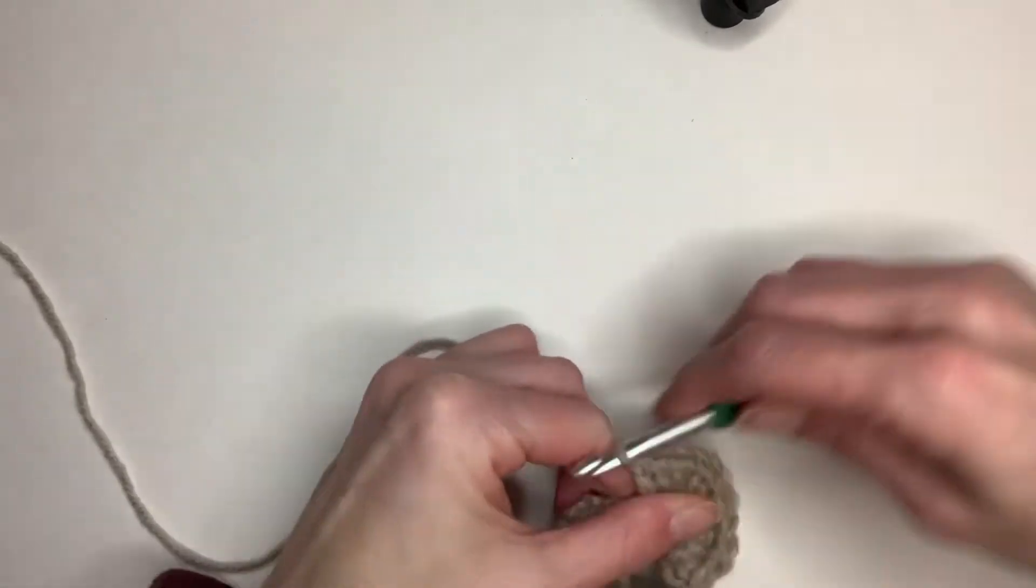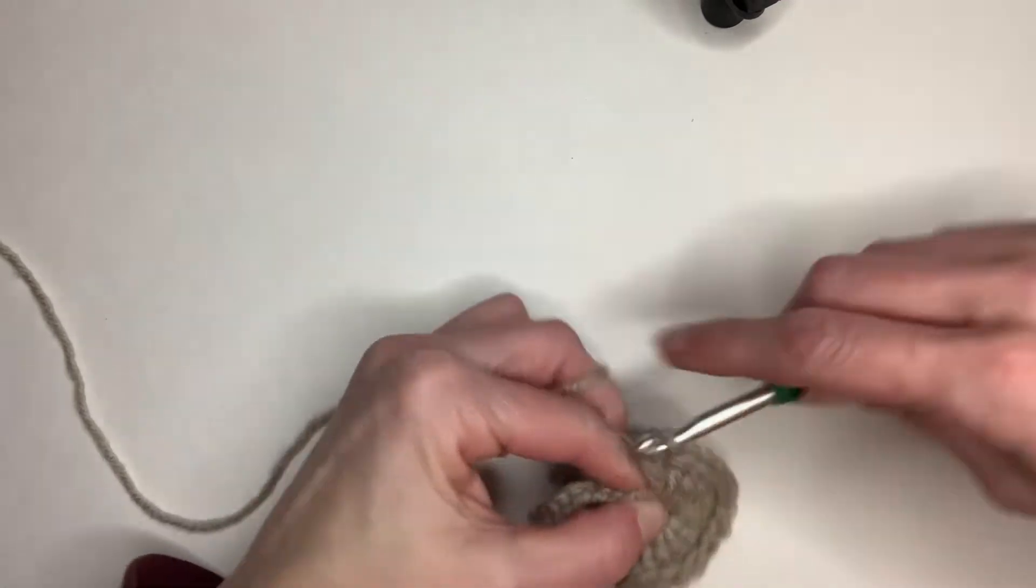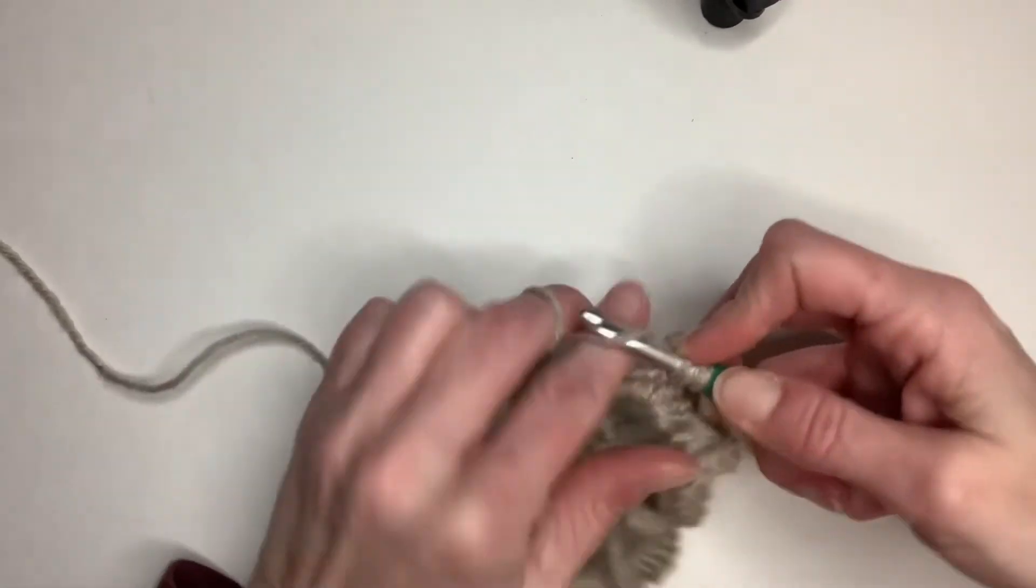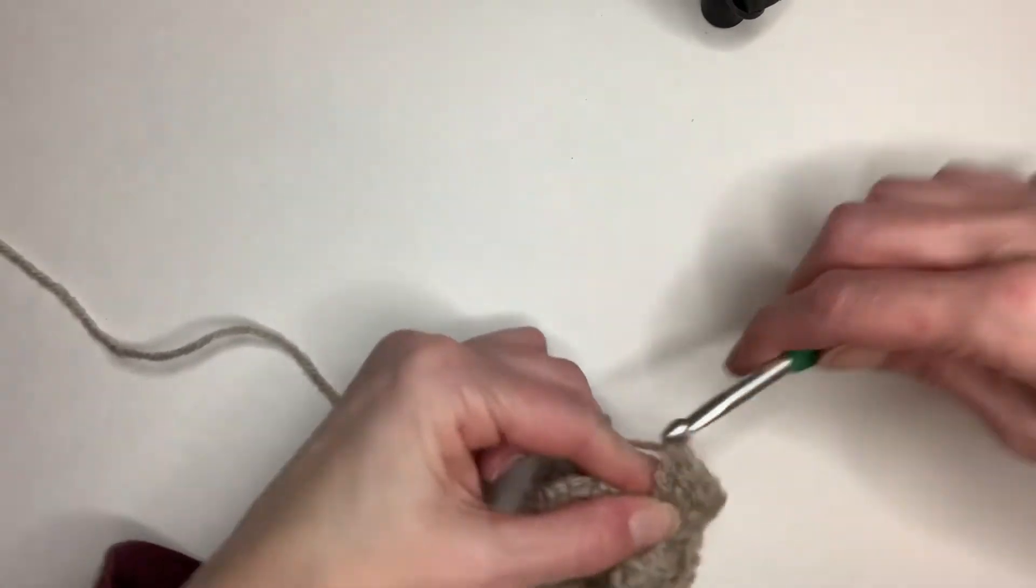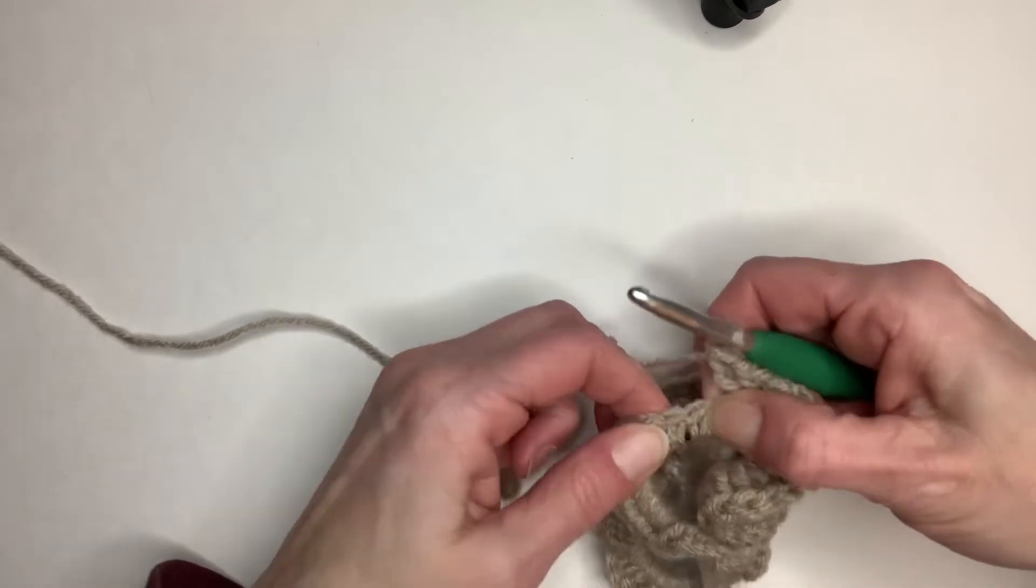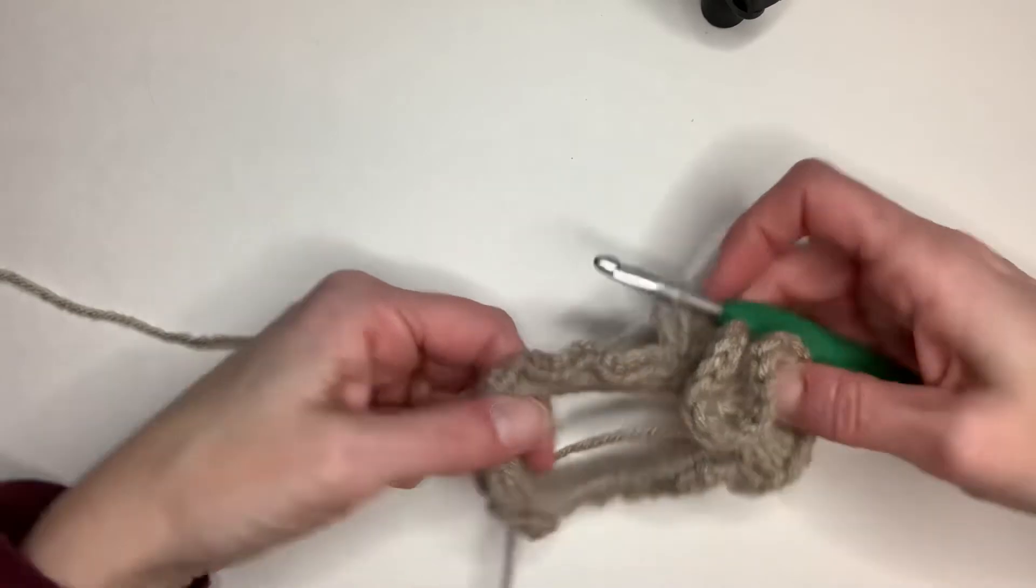Once you have the first one in, it's easy to see where the other two go in. So just kind of pull it apart like that. And then you can see your single crochets right here. So I'm just going to keep going around. I got quite a bit to go yet.